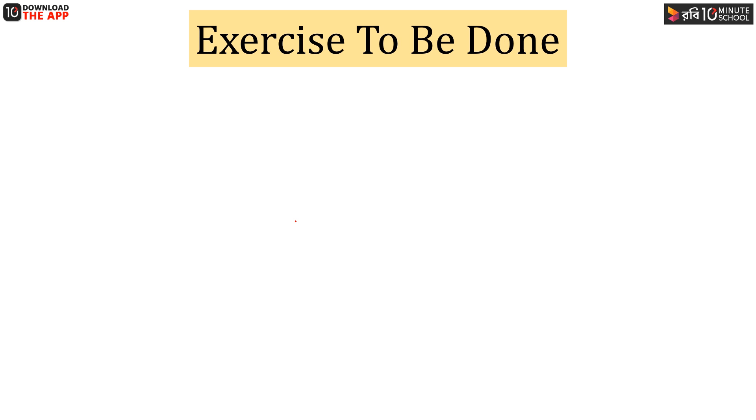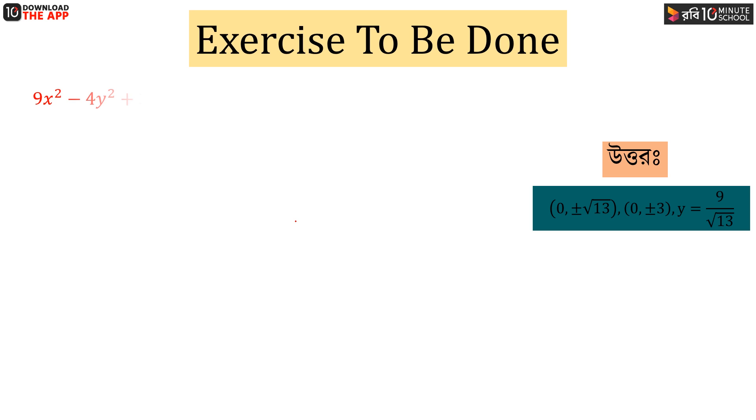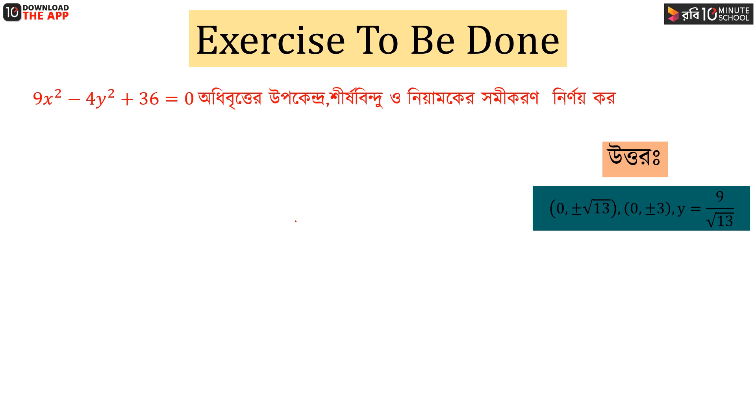We have to verify the correctness of the math. The math we develop will be consistent. Let's practice your exercise. Our next question is: we have been given 9x² - 4y² = 36.